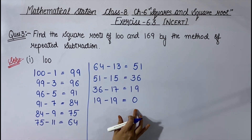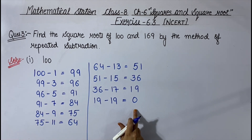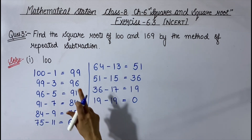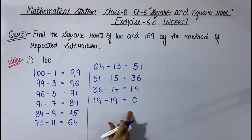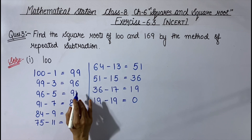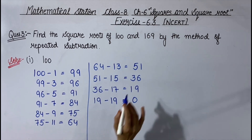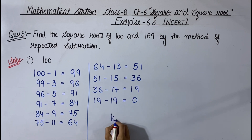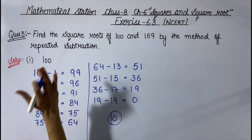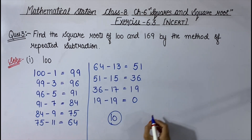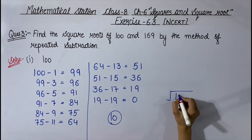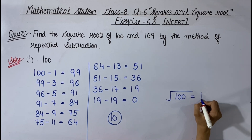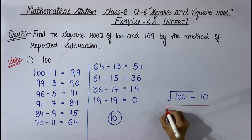We got the answer 0, so we stop subtracting. We keep subtracting until we get 0. Now we have to check after how many steps we got the answer 0. Counting the steps: 1, 2, 3, 4, 5, 6, 7, 8, 9, 10. We got the answer 0 after 10 steps. So the square root of 100 is 10. The square root of 100 is equal to 10. This will be the answer.